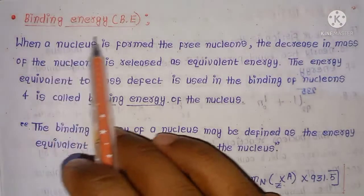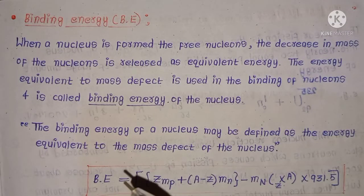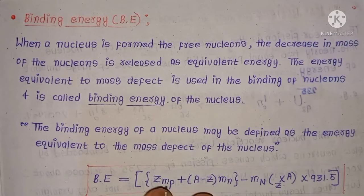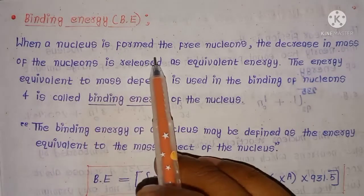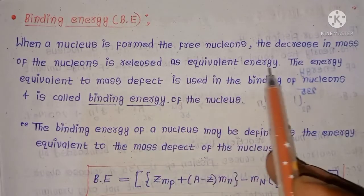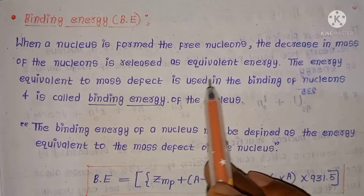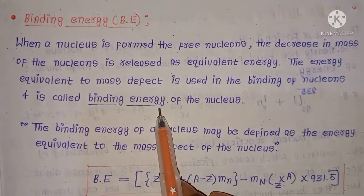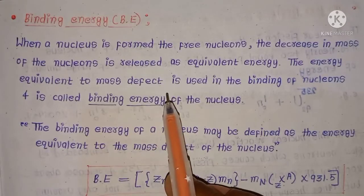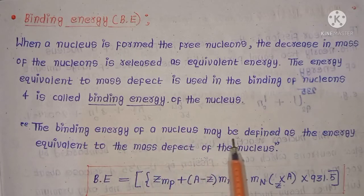The next concept is binding energy. Binding energy is the minimum energy required to bind the nucleons inside the nucleus. When a nucleus is formed from nucleons, the decrease in mass is released as equivalent energy equal to the mass defect — this is called binding energy. So binding energy is the energy equivalent to the mass defect of a nucleus.